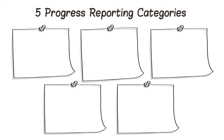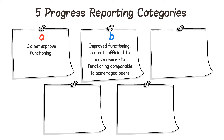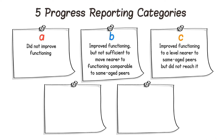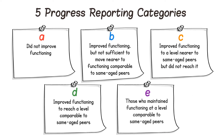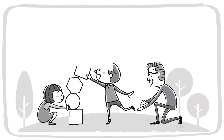When reporting progress data, states identify the percentage of children who: A. Did not improve functioning; B. Improved functioning but not sufficient to move near to functioning comparable to same-age peers; C. Improved functioning to a level near to same-age peers but did not reach it; D. Improved functioning to reach a level comparable to same-age peers; and E. Those who maintained functioning at a level comparable to same-age peers.